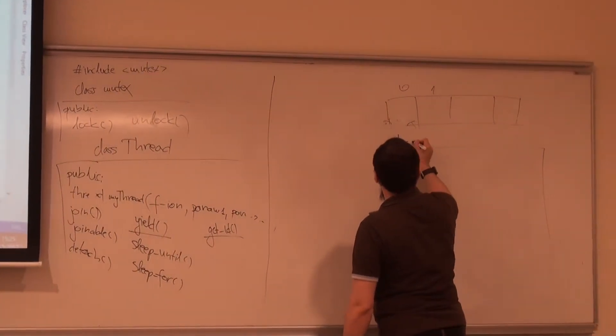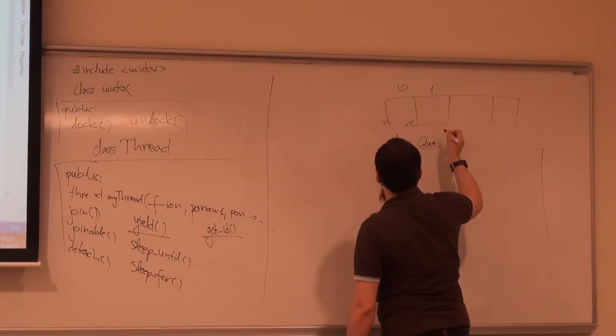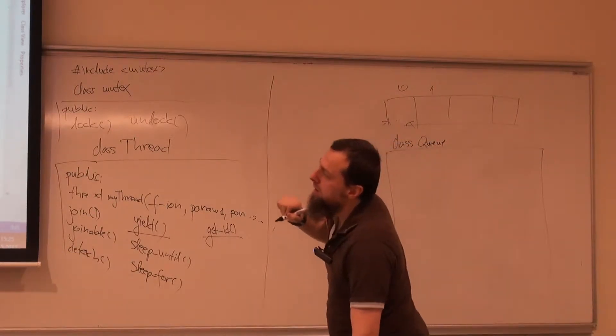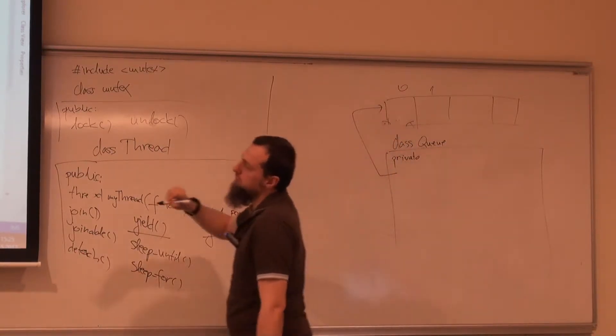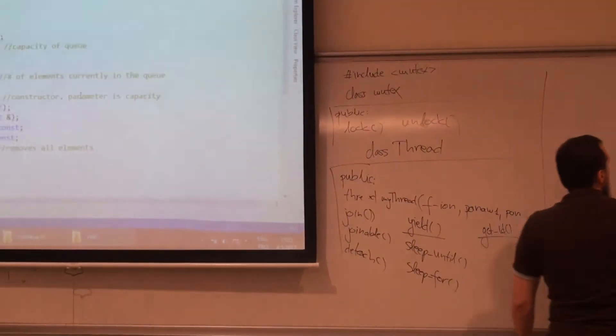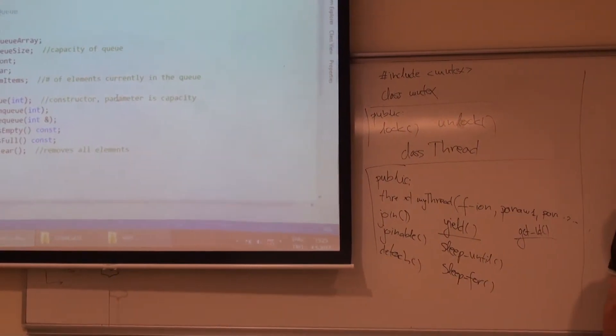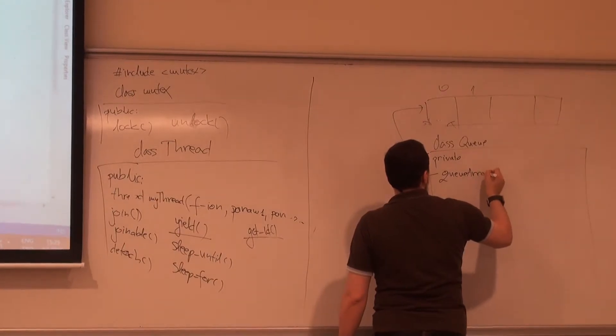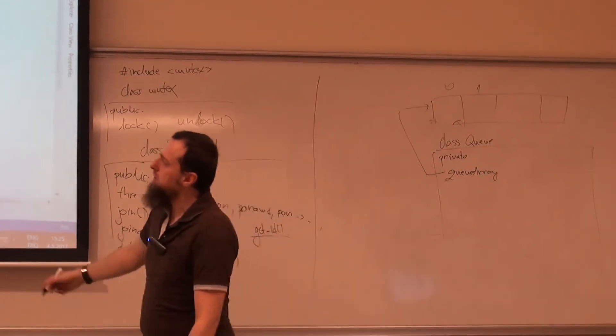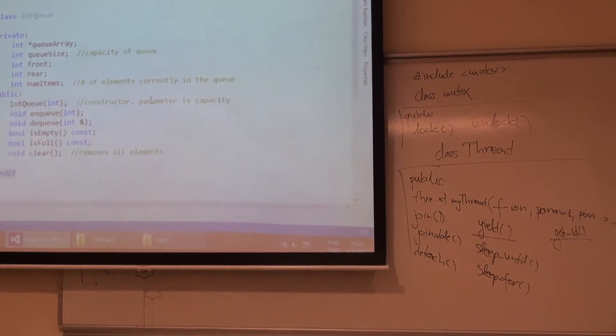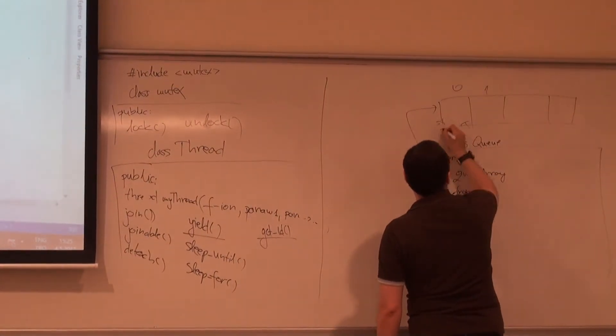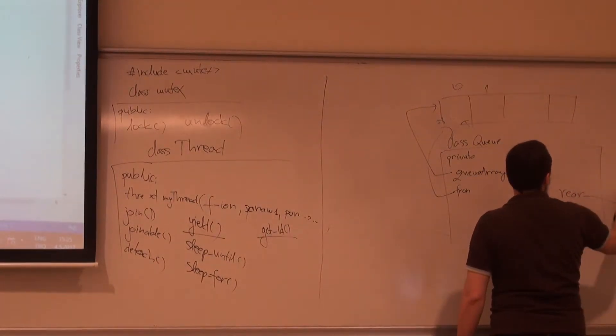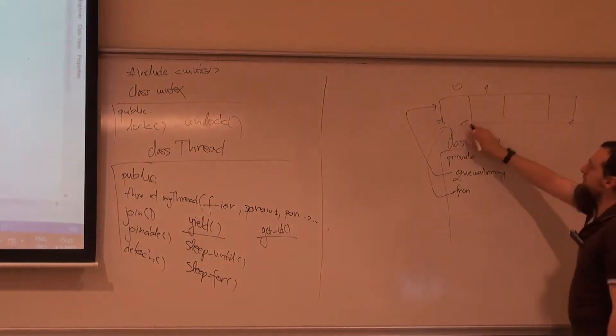So this is my queue class. We did it like maybe two weeks ago, two months ago. Private. We have this array, pointer to an array, called queue array. Then we have what? Queue size, front, rear. Front points to the first element. Rear points to the last element.